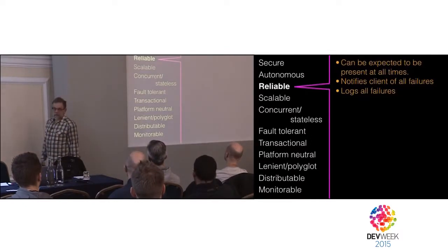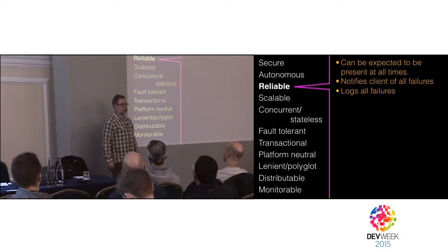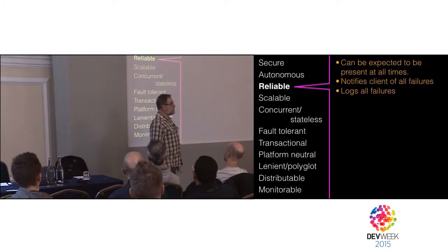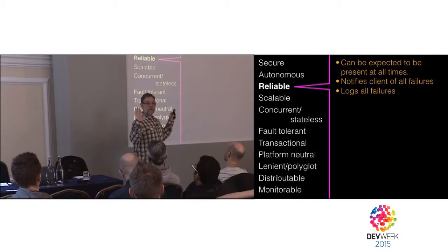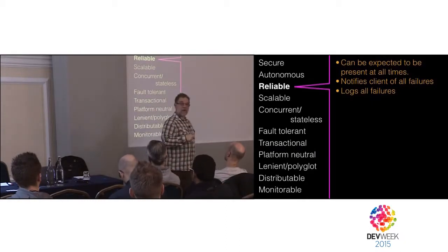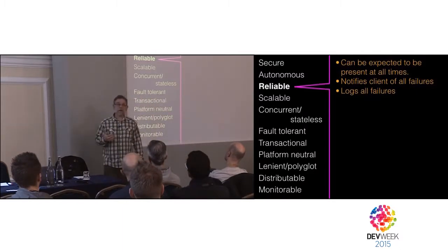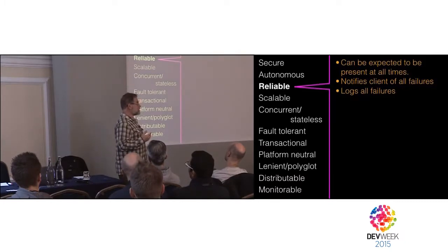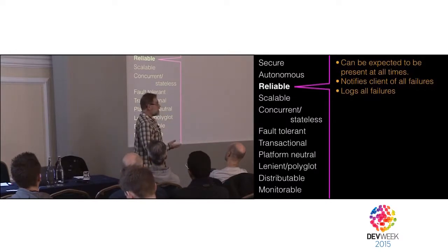It has to be reliable, which means you have to be able to expect it to be there. Services will often have to support either ping — where you can ask the service 'are you alive?' — or a heartbeat, where five times a second the service publishes a notification saying 'I'm alive.' Some other monitoring service can subscribe to that topic to see who's alive and who's not, and relaunch anything that's gone down. We have to assume services are going to fail and write the system with that in mind so they can gracefully recover.